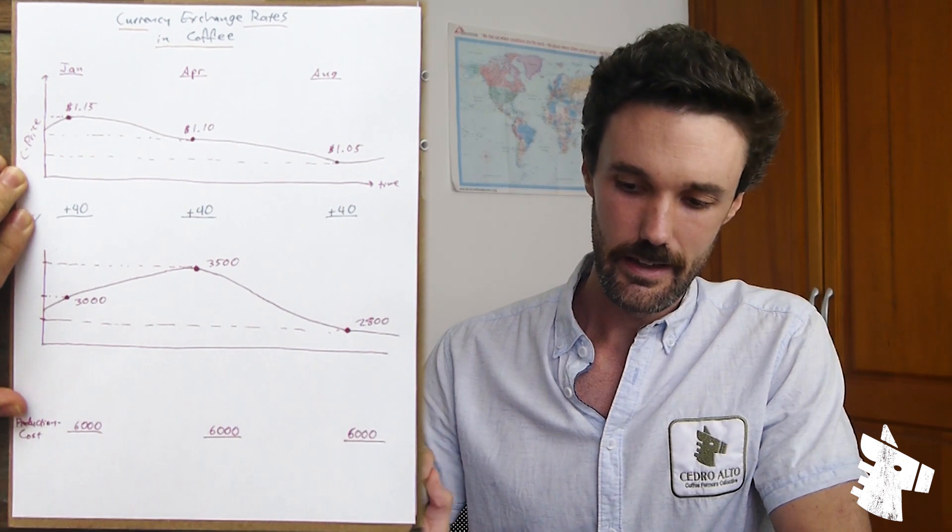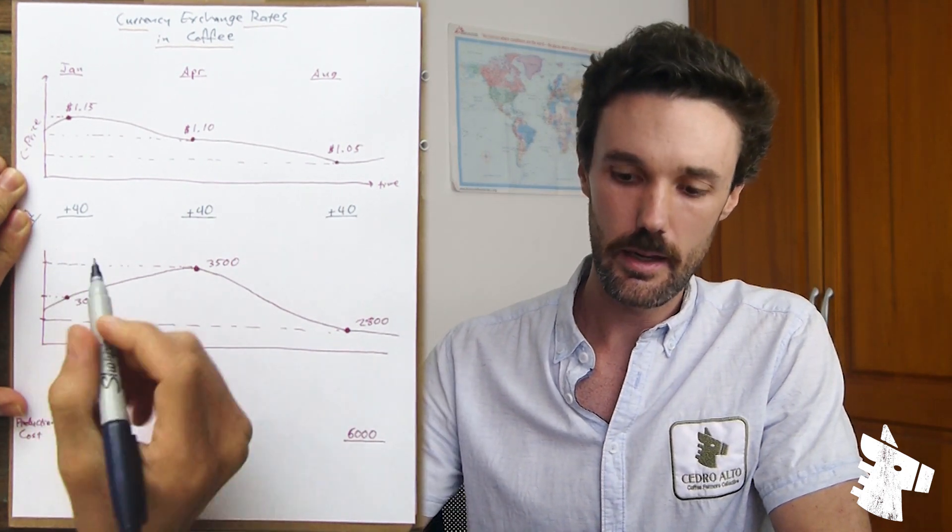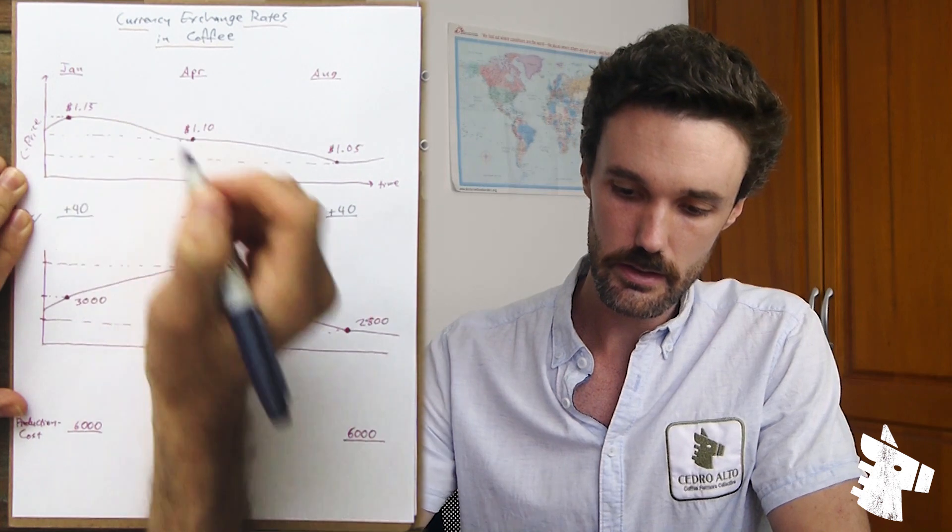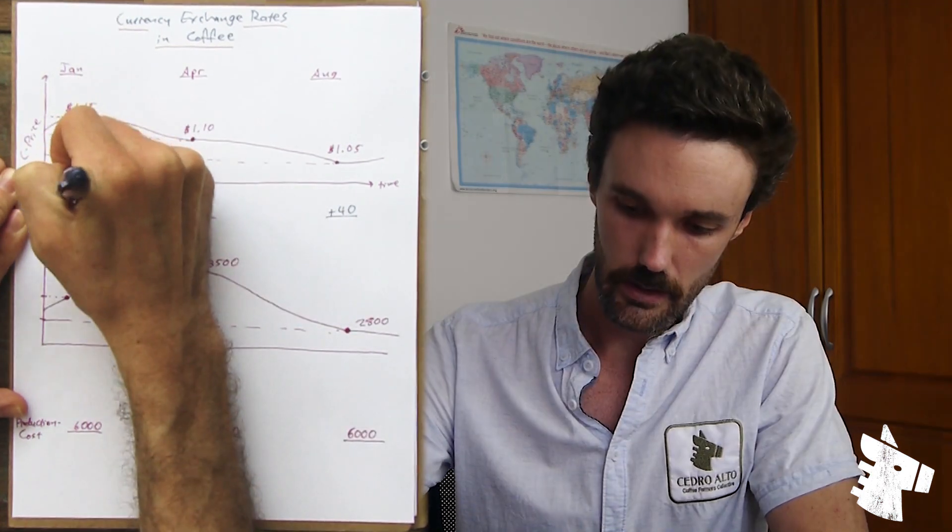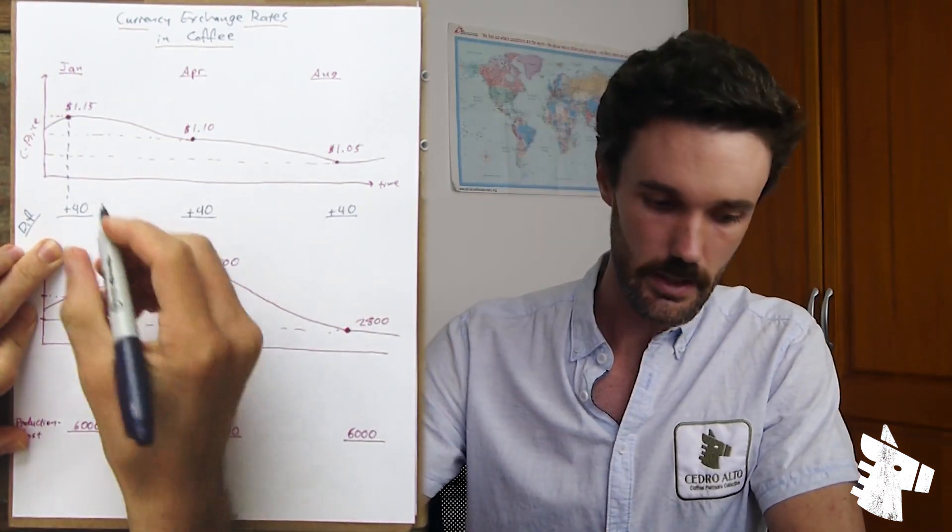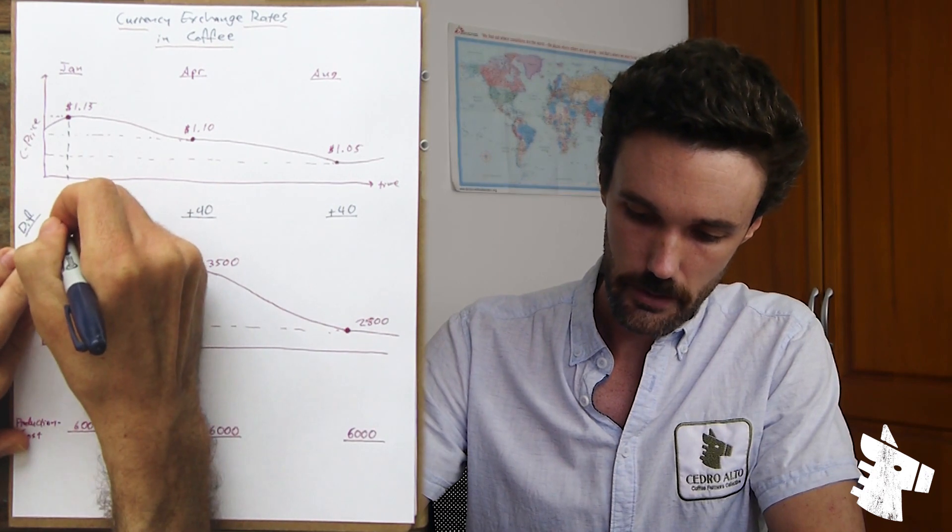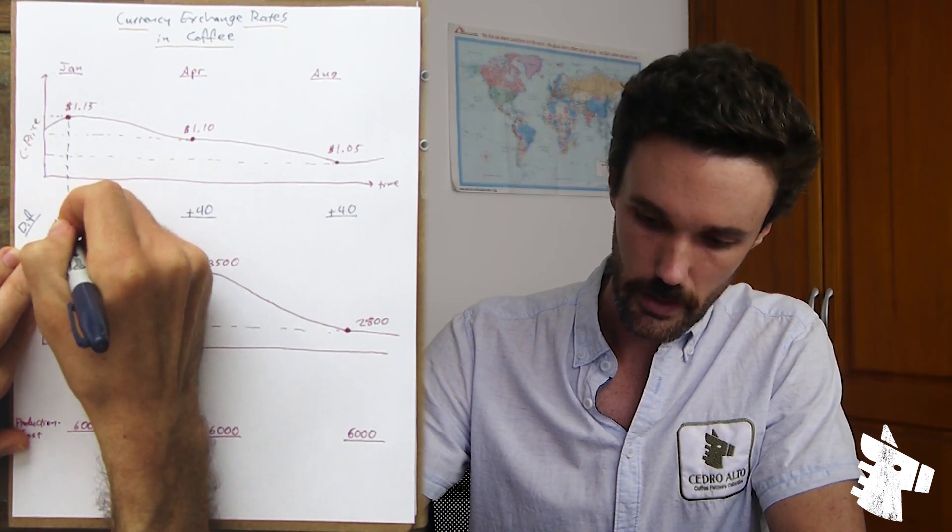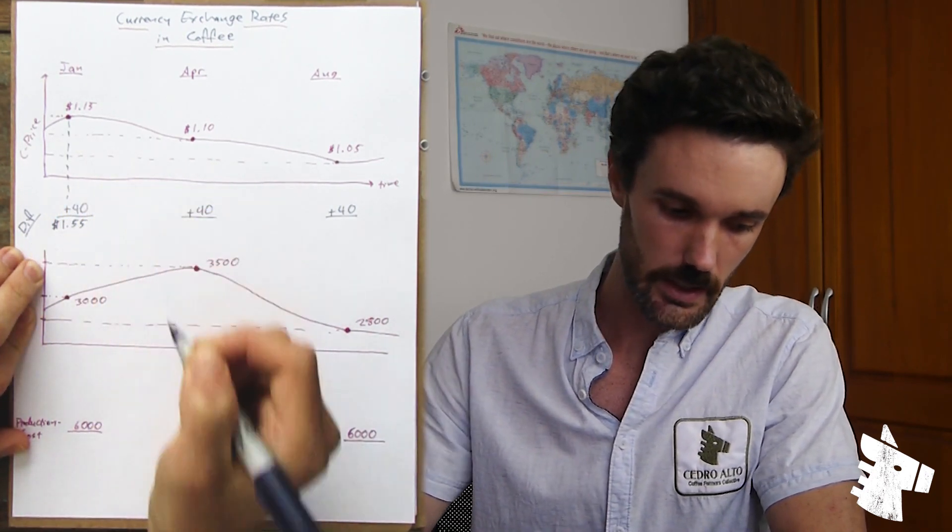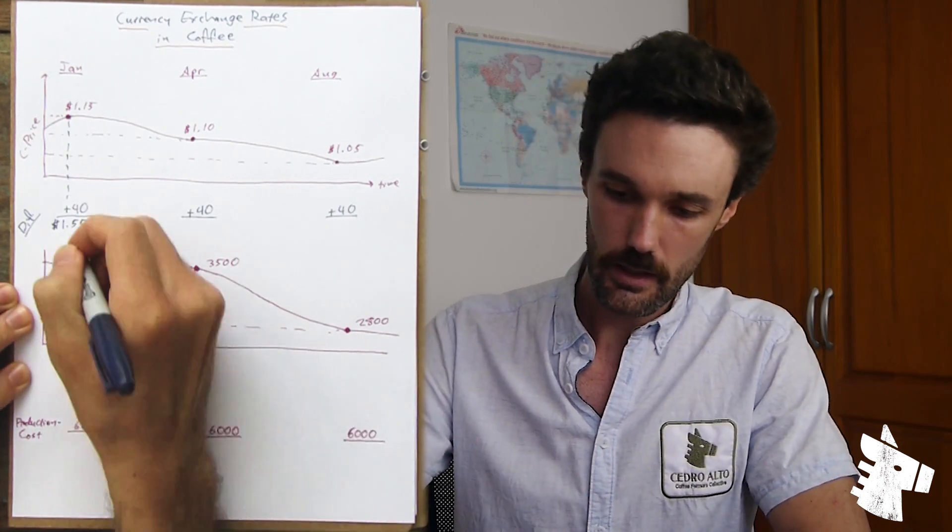Let's say this supply chain were established in January. The C price is $1.15 and our differential is fixed at 40 cents. So we have an FOB price of $1.55 per pound.